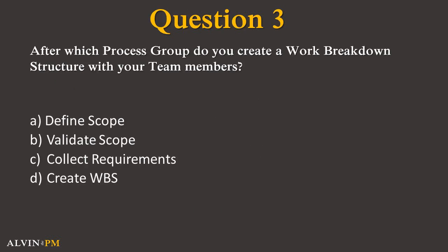Question 3. After which process group do you create a work breakdown structure with your team members? A. Define scope, B. Validate scope, C. Collect requirements, or D. Create WBS?